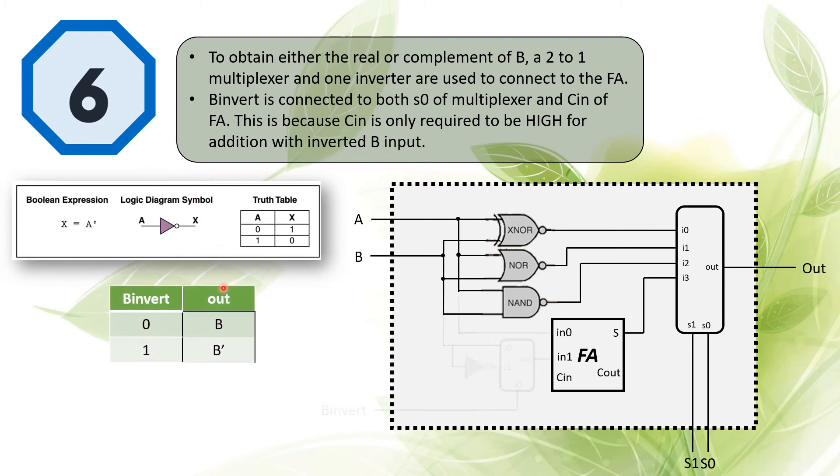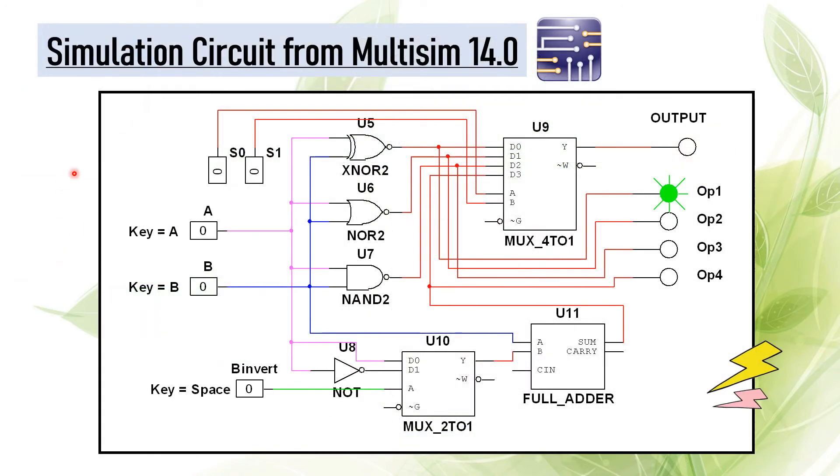So with the inverter connected to the two-to-one multiplexer, it will be a connection like this. We will have an extra B invert to choose whether we need to invert the signal of B input.